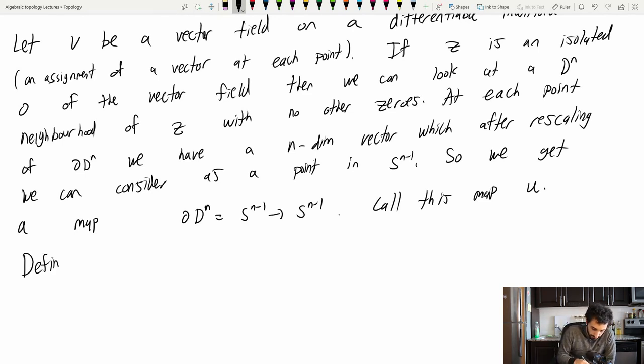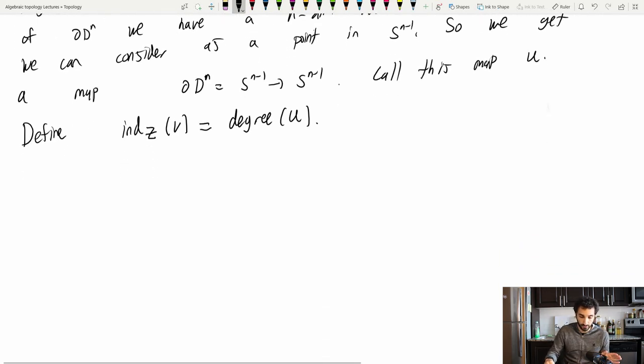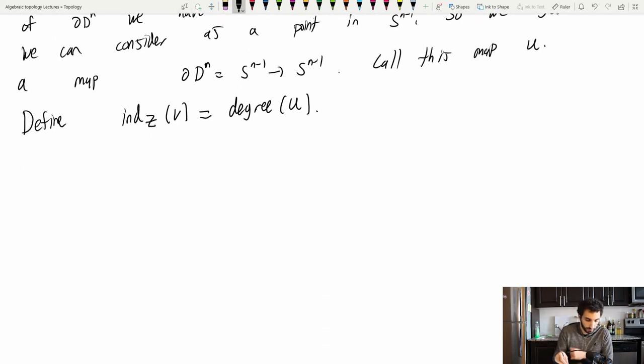Now what do we like to do with maps between spheres of the same dimension? We like to look at their degree. So let's make a definition here. We define the index at z of this vector field v to be equal to the degree of this map u. All right, so that's all maybe a little too abstract to make sense of on the first try, but I'm going to draw some stuff here and we'll see this is all very nice and concrete.